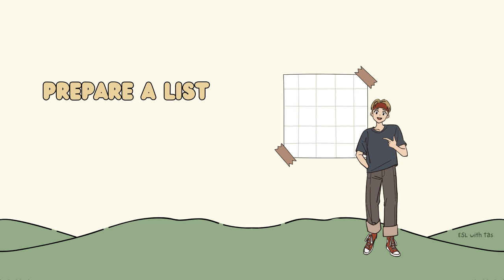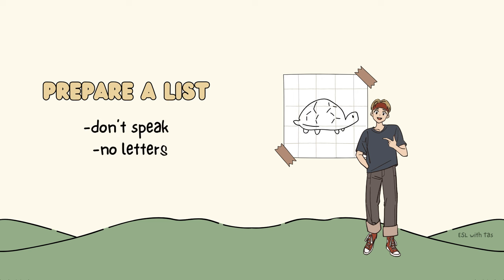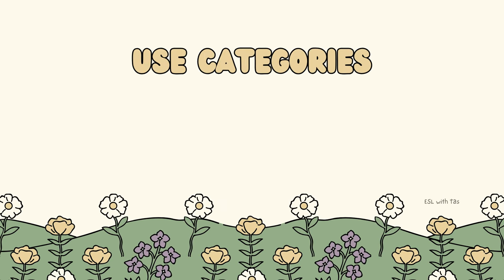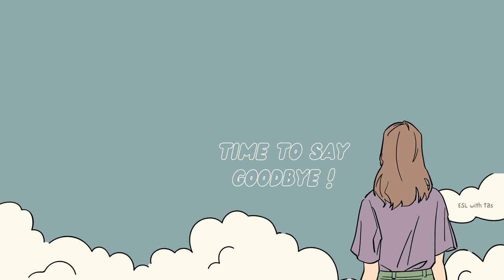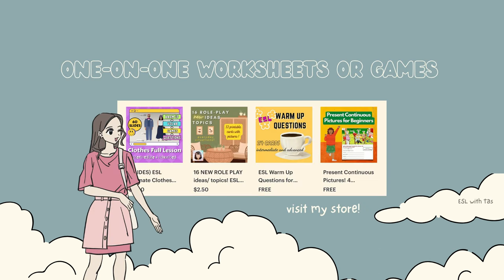Last but certainly not least — Pictionary! Write a list of words on cards and take turns drawing a picture of the word while the other person guesses what it is. The drawer cannot speak or write any letters. If the student guesses correctly, they earn a point; if not, you can give hints and then reveal the answer. I'd prefer to switch roles after a set time or a few rounds. Try to use specific categories like things in the kitchen, places, emotions, or any topic you're covering that lesson.